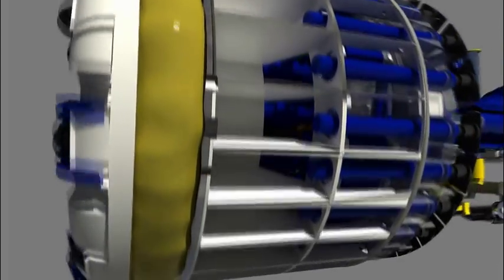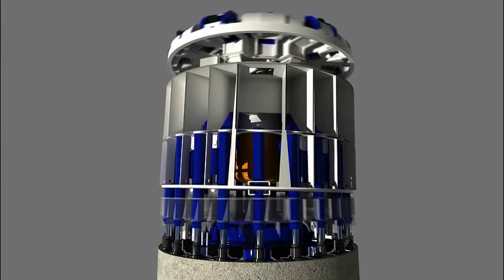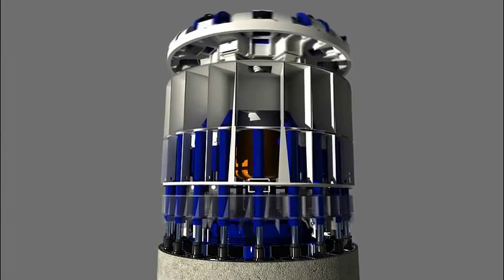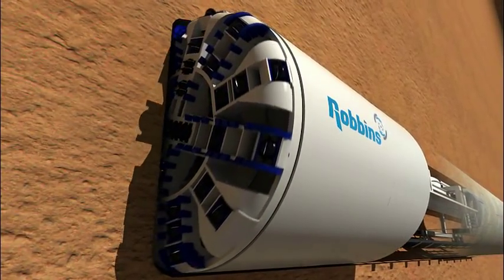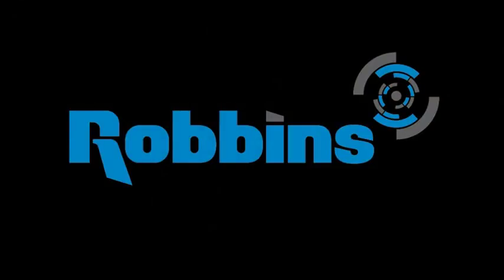Robbins earth pressure balance machines maintain the highest quality standards in the industry, resulting in rugged machines that create the longest tunnels in any type of soft or mixed ground. Robbins, the most trusted name in tunneling.